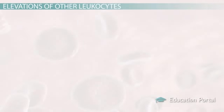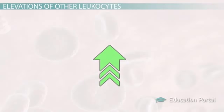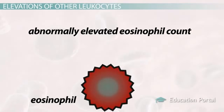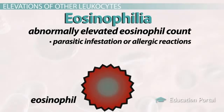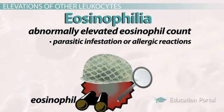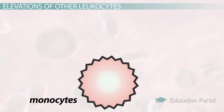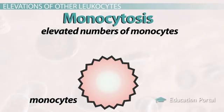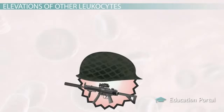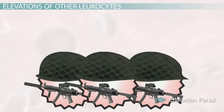An abnormally elevated eosinophil count, termed eosinophilia, occurs as a result of parasitic infestation or allergic reactions. Eosinophils are like counterintelligence units of the body — they're not very numerous, but they fight against sneaky parasites and internal saboteurs trying to destroy your body in autoimmune disease. Infections, cancer, and inflammation can also result in elevated numbers of monocytes, called monocytosis. Monocytes are like special forces — like the Navy SEALs, they can transform into units suited for different environments and tissues on command.